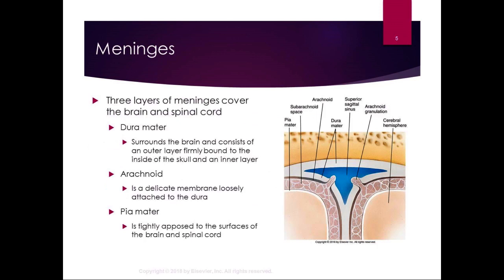The three layers of the meninges cover the brain and the spinal cord. The dura mater is the tough outer layer that surrounds the brain, firmly bound to the inside of the skull, with an inner layer. The arachnoid is a delicate membrane loosely attached to that inner layer of the dura. The pia mater is tightly opposed to the surfaces of the brain and spinal cord. There are potential spaces between the dura mater and the brain and between the dura mater and the arachnoid — we'll talk about those with regard to pathology.